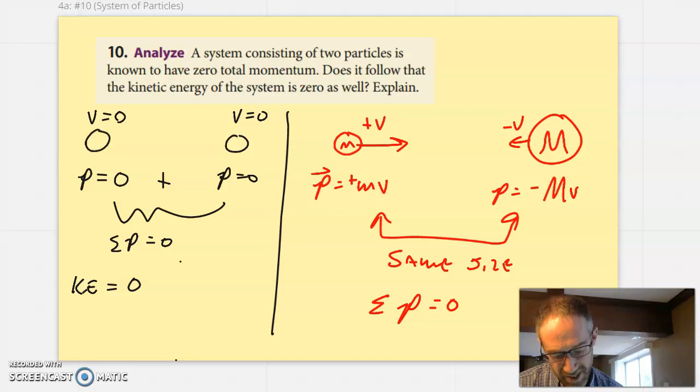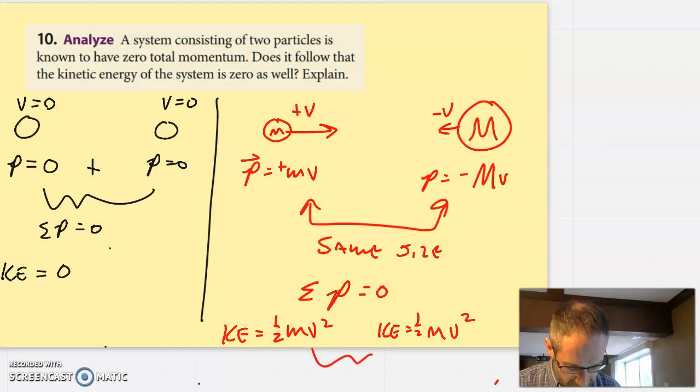Kinetic energy is a scalar versus momentum is a vector. When I calculate kinetic energy, I don't care that it's moving right or left, and it's still going to give you a positive amount of total kinetic energy. The left, the right part don't make a difference with kinetic energy. So no, the answer is no. It does not follow that you have zero kinetic energy if you have zero momentum of a system.